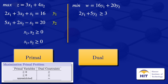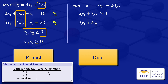Moving to variable x2: its coefficient in the objective function is 4, and in the constraints the coefficients are 3 and 2. So we have 3y1 plus 2y2. Since x2 is greater than or equals to 0, the dual constraint is greater than or equals to, giving us 3y1 plus 2y2 greater than or equals to 4.